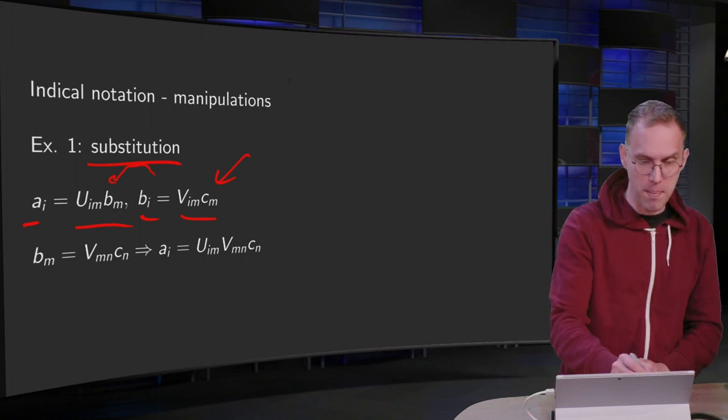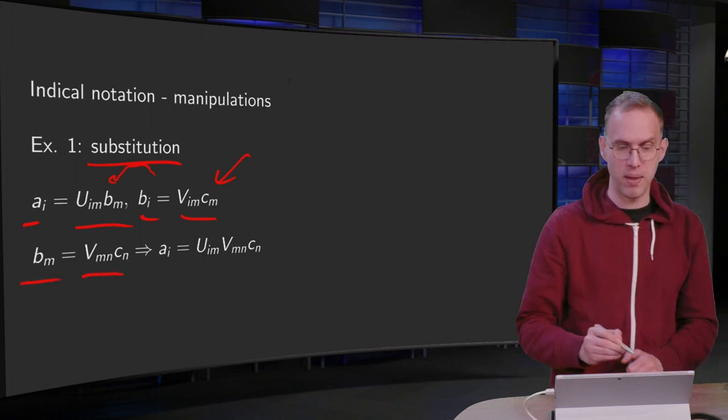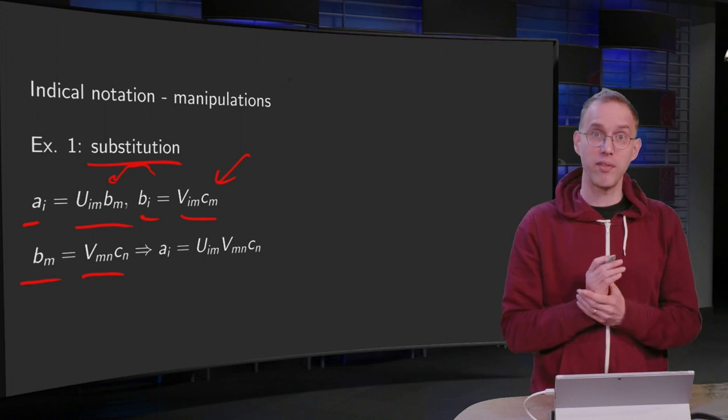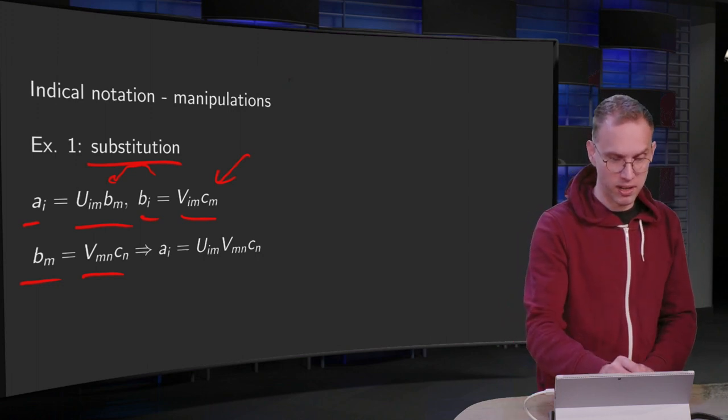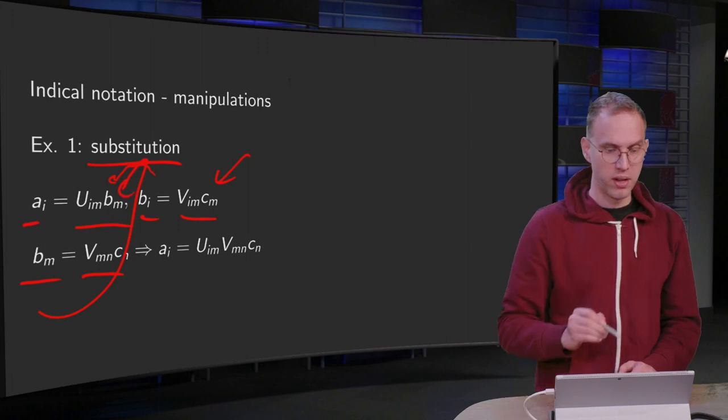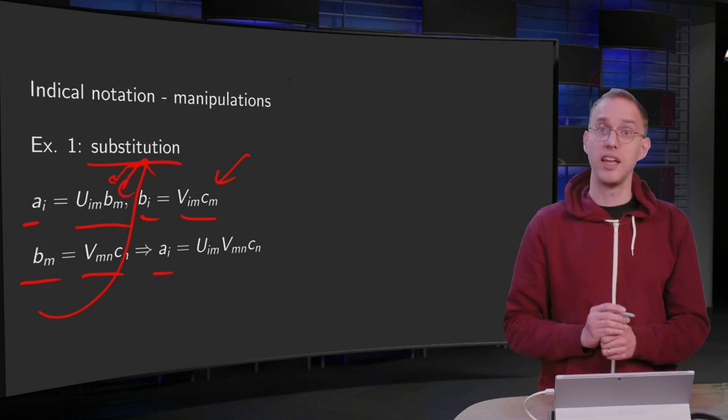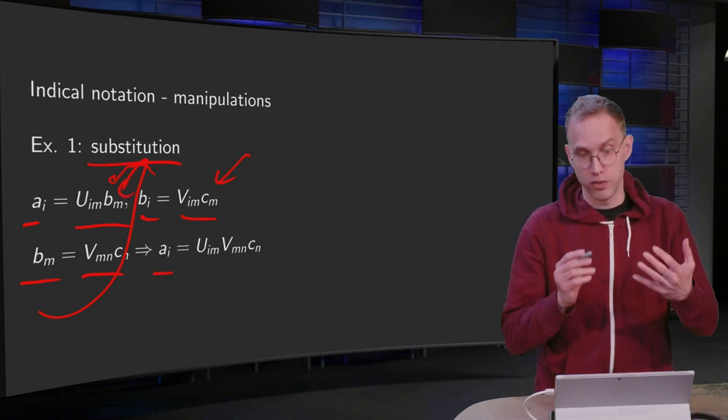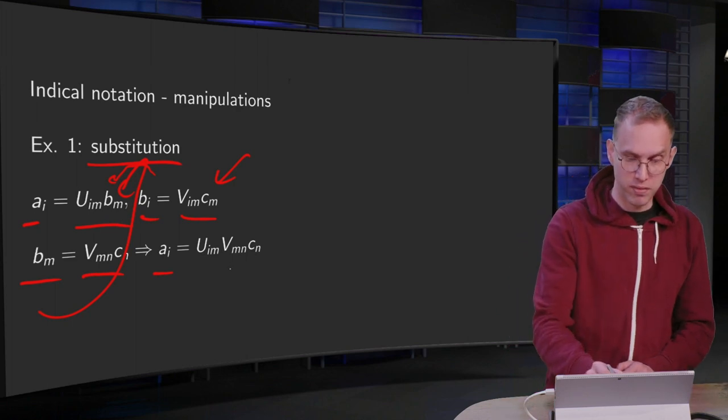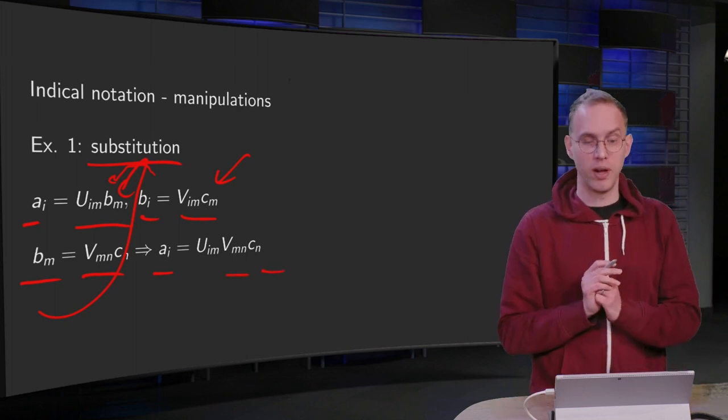Then we have changing the i by n: b_m = V_mn c_n. And there we have our c_n, and then we can just plug it in over there to get our a_i = U_im times V_mn c_n, and there we go.